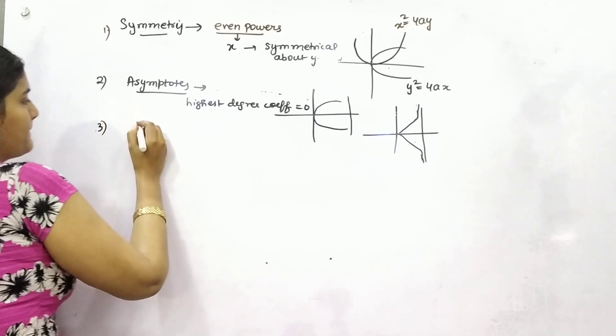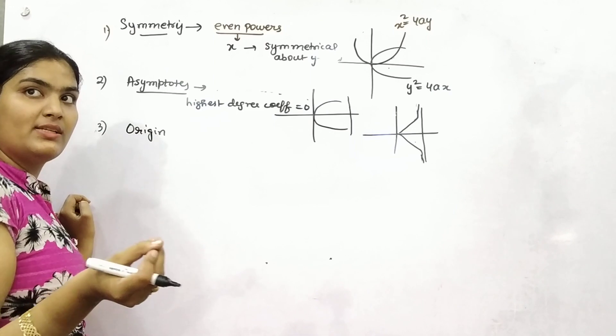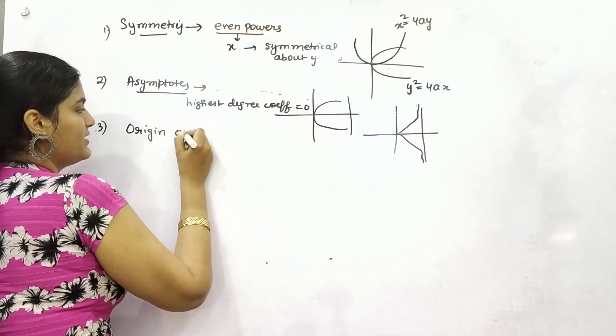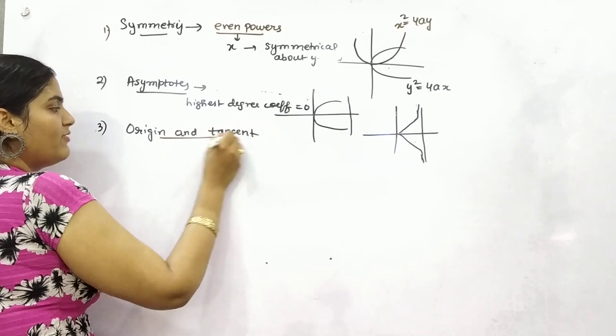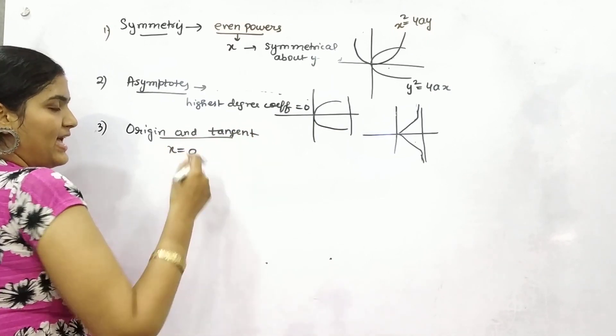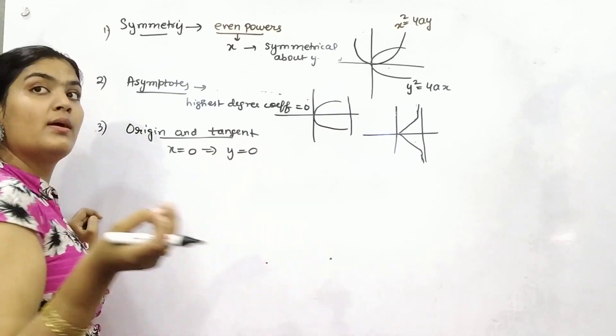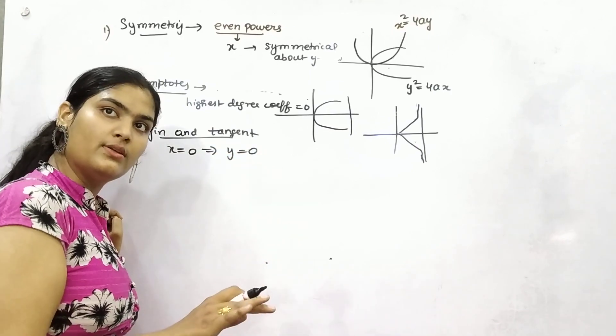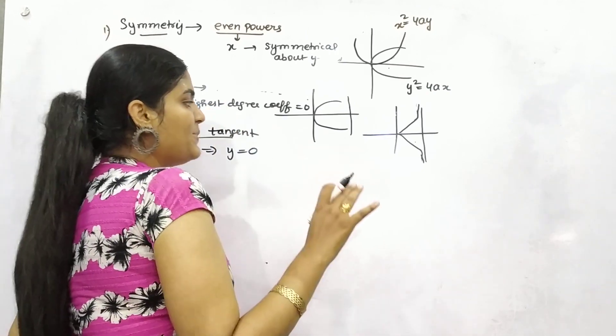Third point is to find out whether the curve is passing through origin or not, and the tangent. For origin, it's simple - if you put x as 0 and that gives you y as 0, then it will definitely pass through origin. But for tangent, bear in mind, let me tell you.